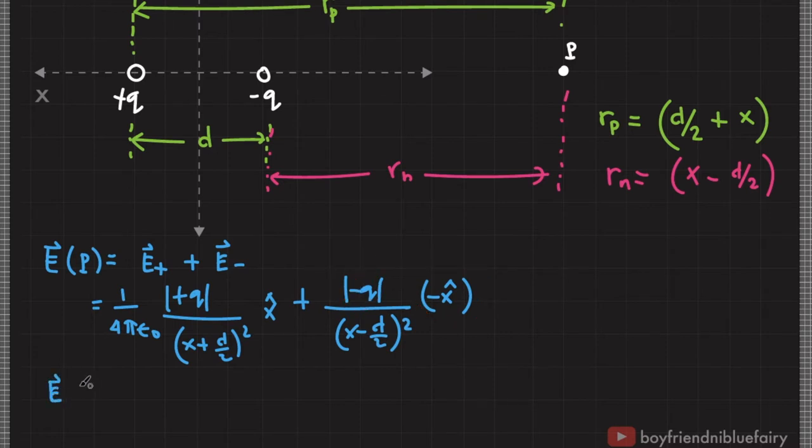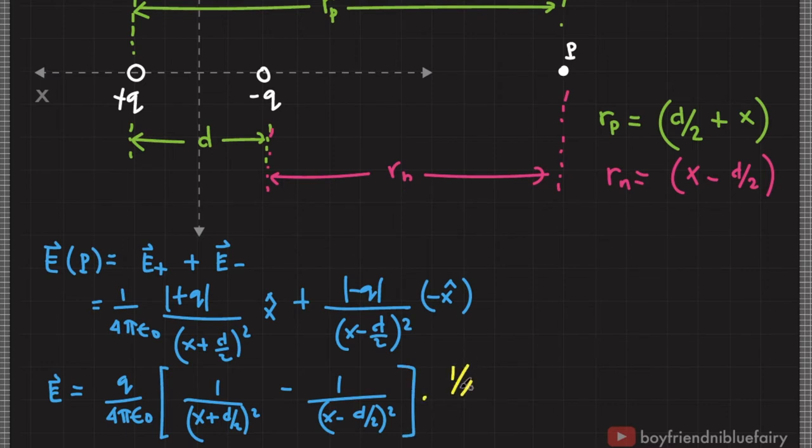Extracting the common terms, electric field is equal to charge divided by 4 pi epsilon naught quantity 1 over x plus d over 2 squared minus 1 over x minus d over 2 squared. And let's multiply this entire equation with 1, which is 1 over x squared divided by 1 over x squared, x hat.